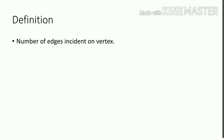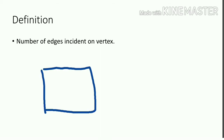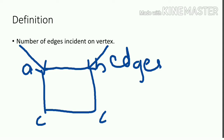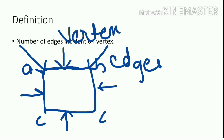Now, what are edges and vertices? Taking an example, suppose this is a square with corners A, B, C, D. The corner points A, B, C, D are known as vertices, and the sides connecting them are known as edges.